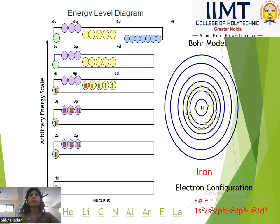The electronic configuration of iron is: 1s², 2s², 2p⁶, 3s², 3p⁶, 4s², 3d⁶. In this: 2 electrons in the first shell, then 8 electrons in the second shell, and 2 electrons in the last 4s² shell.